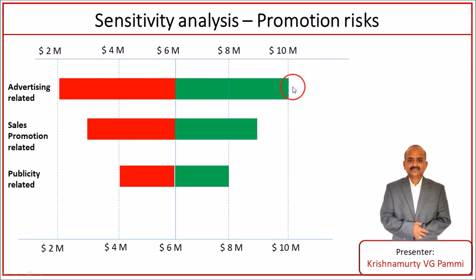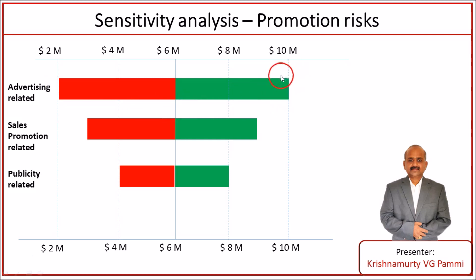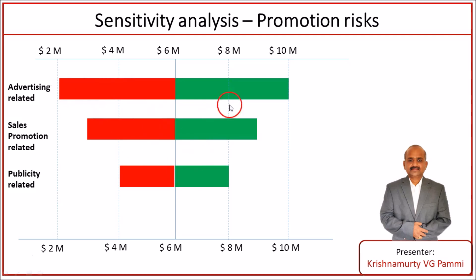While studying the advertising related risks, we keep all other risks at their base level and see how sensitive advertising related risks can be — how much it can elongate to the positive side and how much to the negative side from the base value. Advertising related risks give us a profit margin of 10 million US dollars if we handle them well. If we don't handle them well, it gives a profit margin of 2 million US dollars — meaning with the existing campaign, the advertising related risk can earn us a profit of only 2 million. Likewise, we can study the impact of the listed risks on our target in the decreasing order of risk sensitivity.